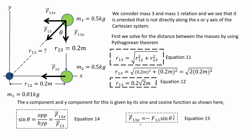We consider the mass 3 and mass 1 relation and we see that it is oriented not directly along the x- or y-axis of the Cartesian system. First we solve for the distance between the masses using the Pythagorean theorem, as shown in equation 11. The length between mass 3 and mass 1 is given by equation 12.